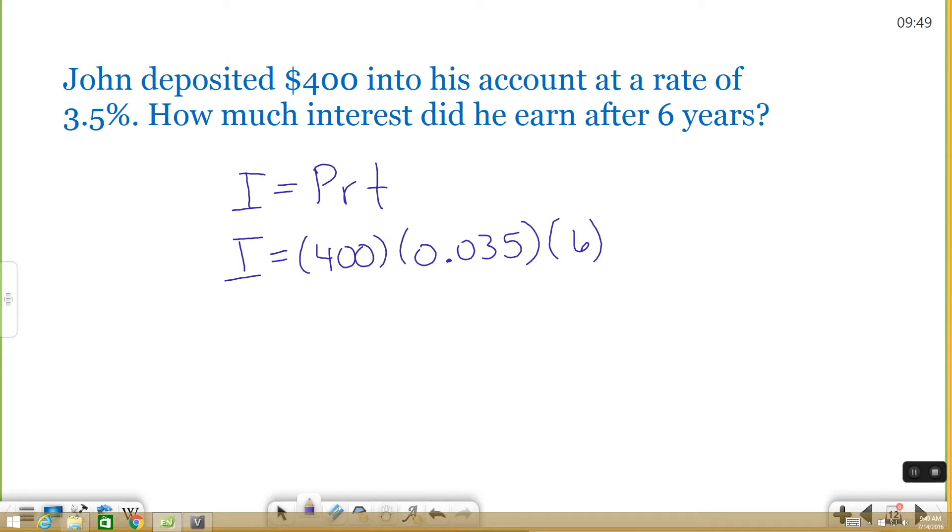And then T is time. Time is always measured in years for these types of examples. So if you're given months or something like that, you need to figure out how many years that is. All right. Now I know this. I can just multiply it out, type it in the calculator, and I will get my interest. So 400 times 0.035 times 6 is going to get you 84. So my interest on depositing $400 for six years at 3.5% is going to be 84.